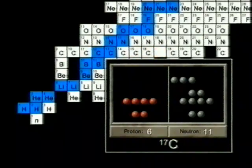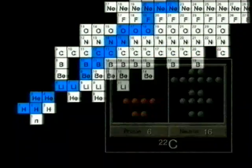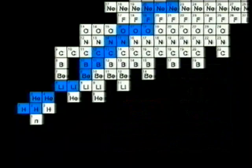For example, all carbon isotopes have 6 protons, but there can be 13 different isotopes, and the number of neutrons ranges from 3 to 16.